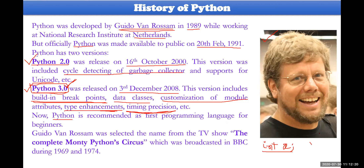He selected the name Python from one serial broadcasted on BBC during 1969 to 1974. That particular serial is 'Monty Python's Flying Circus.' The name Python was taken from this serial. He is a very big fan of BBC — British Broadcasting Corporation TV — always watching news and serials from BBC. He was inspired by that particular serial and gave the language the name Python.